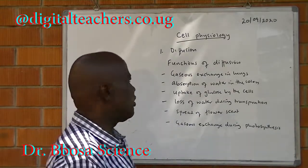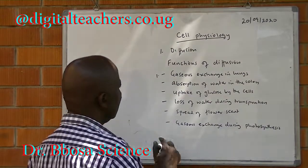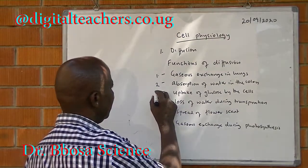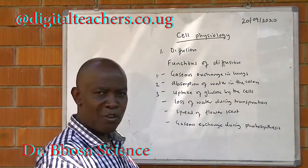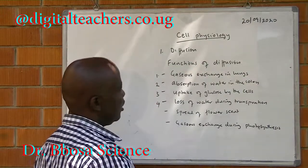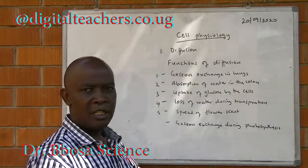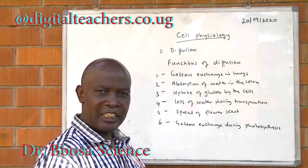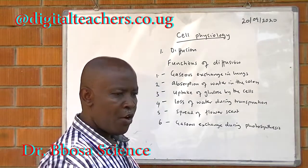Functions of diffusion: one, gaseous exchange in lungs; two, absorption of water in the colon; three, uptake of glucose by the cells from blood and intercellular fluids; four, loss of water during transpiration; five, diffusion of scent from flowers; six, gaseous exchange during photosynthesis. All these occur by diffusion.